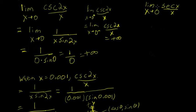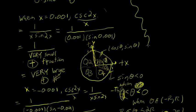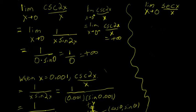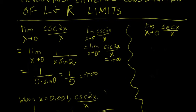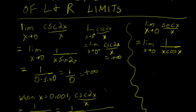Now we're going to look at the limit as x tends to 0 of secant of x over x. If we recognize secant of x as 1 over cosine of x, we can rewrite this limit as the limit as x tends to 0 of 1 over x cosine of x.